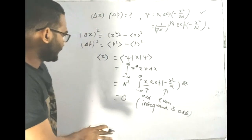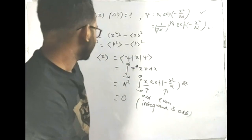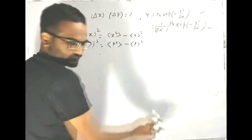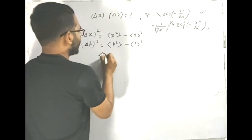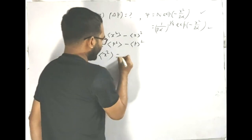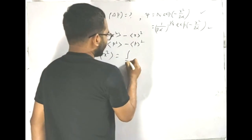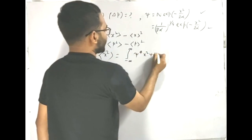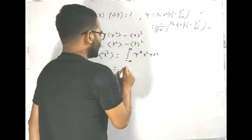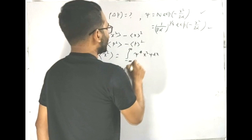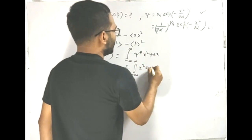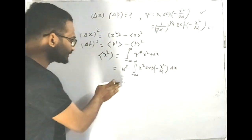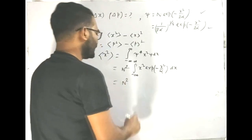So the average of x is zero. Now let's find x squared average. We write it as the integral from minus infinity to plus infinity of psi star times x squared times psi dx, which produces N squared times the integral from minus infinity to plus infinity of x squared times exponential minus x squared by alpha dx.